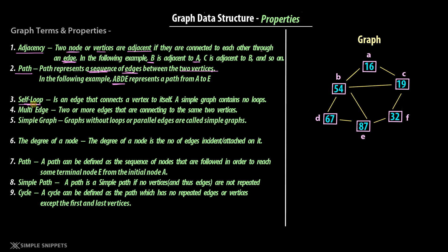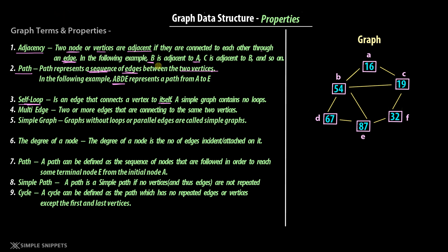The next thing is self loop. An edge that connects a vertex to itself is basically a self loop. In our scenario we currently don't have a self loop, but a self loop would look like an edge connecting one vertex back to itself — for example, B connected by an edge to itself. In a simple graph we don't have any self loops. In some real-world cases it's possible that one particular location has a path to itself and self loop scenarios occur.